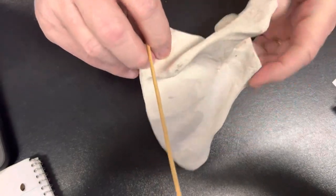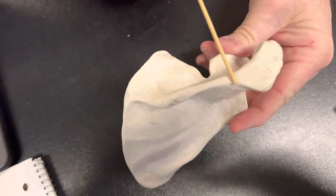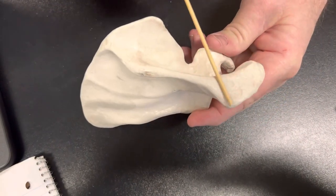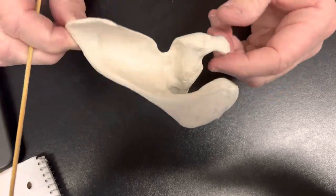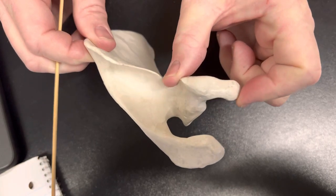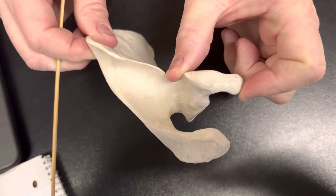If we go along the scapula spine some more and we come out to the end, you'll notice this structure right here. That's my acromium. And then in the front we have another process and this is my coracoid process which is right here. So that's the coracoid process.